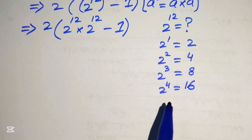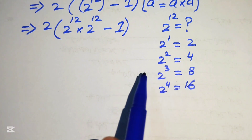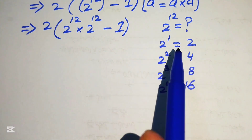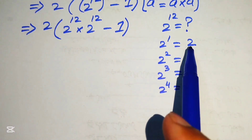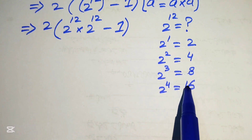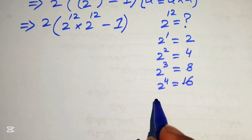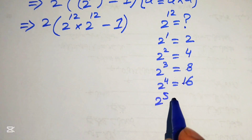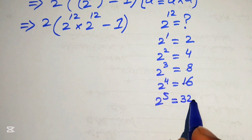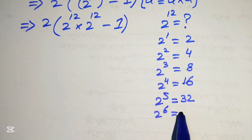To get the next number we simply multiply the previous number by 2: 2, then 4, then 8, then 16. So 2 to the power of 5 is 16 times 2, which is 32; and 2 to the power of 6 equals 64.